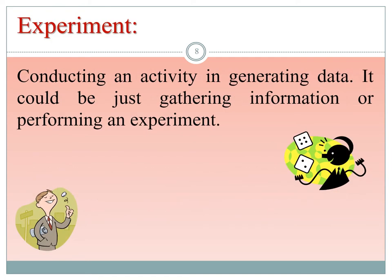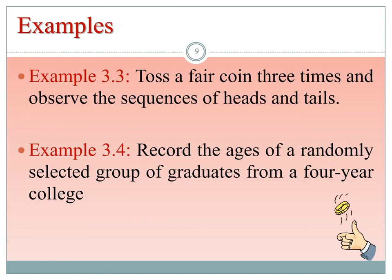The first definition is experiment: conducting an activity that generates data, either gathering information or performing an experiment. For example, tossing a fair coin three times and observing the sequence of heads and tails. Three tosses can yield outcomes like all heads, all tails, two tails then a head, and so on — several different outcomes are possible. This is what we call an experiment.